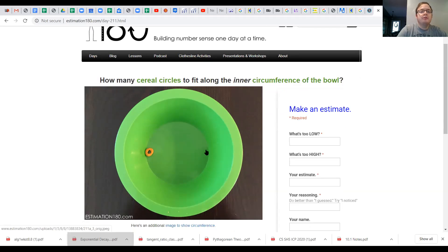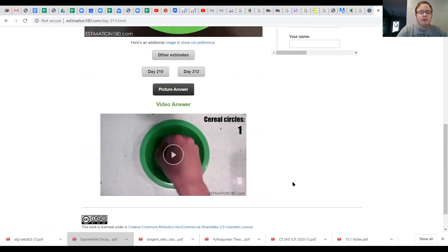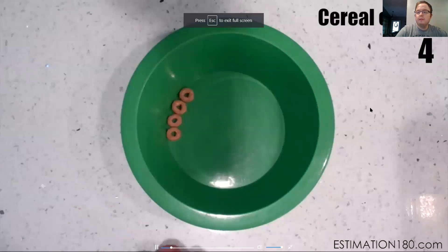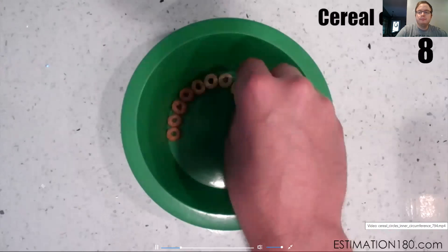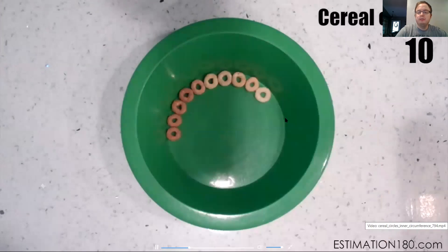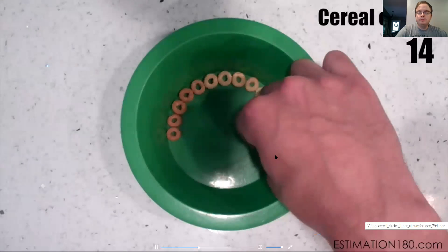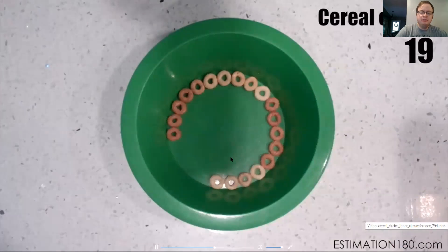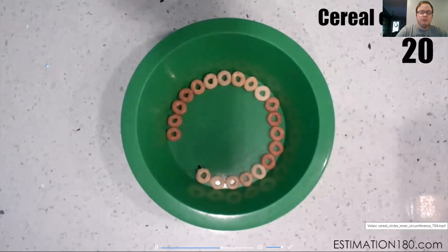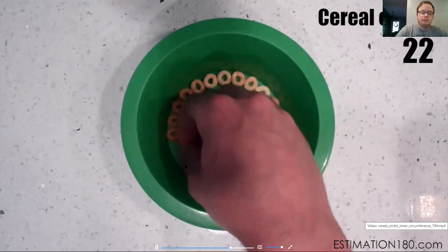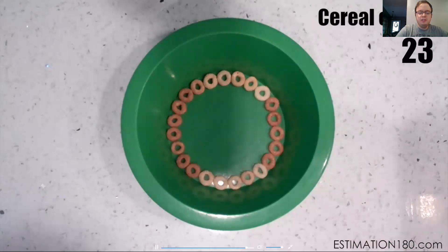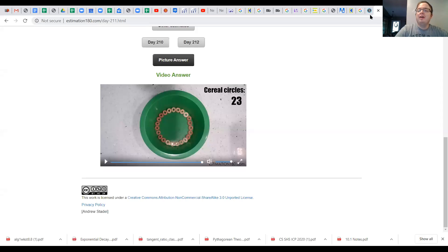I'm going to say there will be 21 circles of cereal at the bottom of the cup. Let's see what the right answer is - I didn't look ahead. Yeah, I'm definitely way off. The answer is 23 cereal circles. Good job if you got it right!